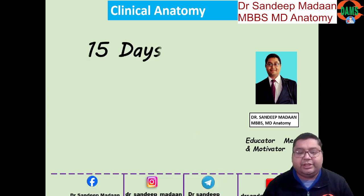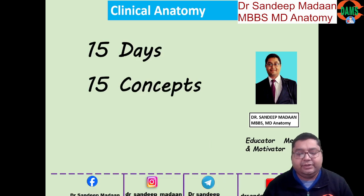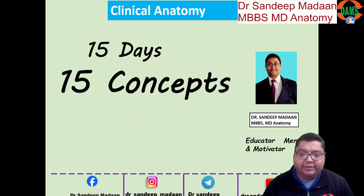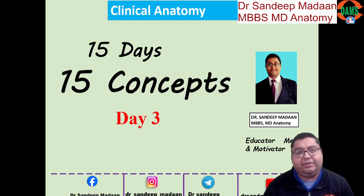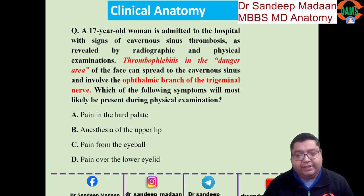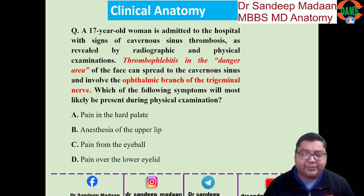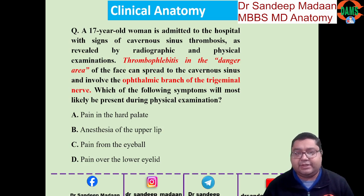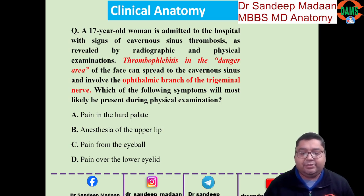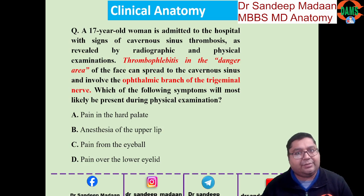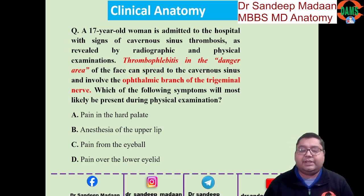Welcome to the 15 days, 15 concepts series. Today is Day 3, where we will be learning one concept with the help of one question. The question is: a 17-year-old woman is admitted to the hospital with signs of cavernous sinus thrombosis, as revealed by radiographic as well as physical examination. Thrombophlebitis in the danger area of the face can spread to the cavernous sinus and involve the ophthalmic branch of the trigeminal nerve. Which of the following symptoms will most likely be present during the physical examination?